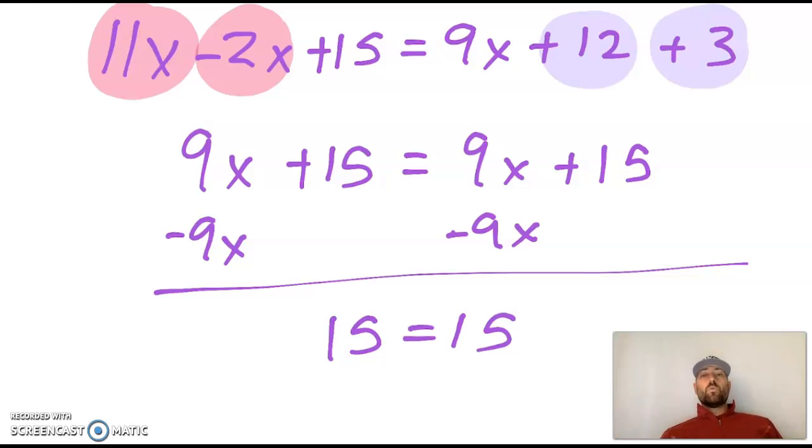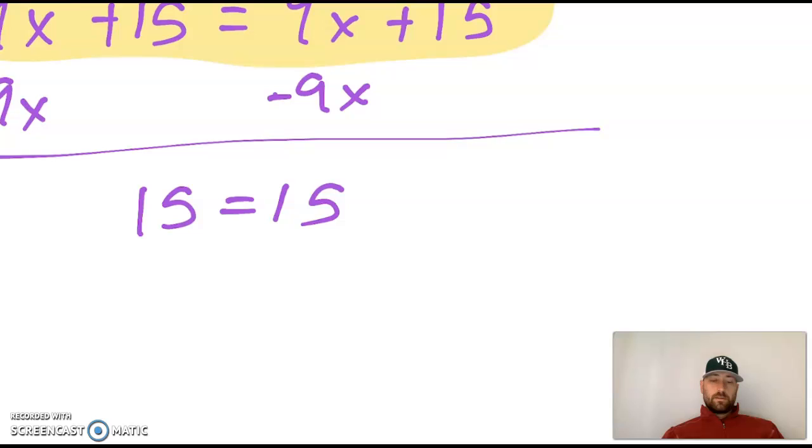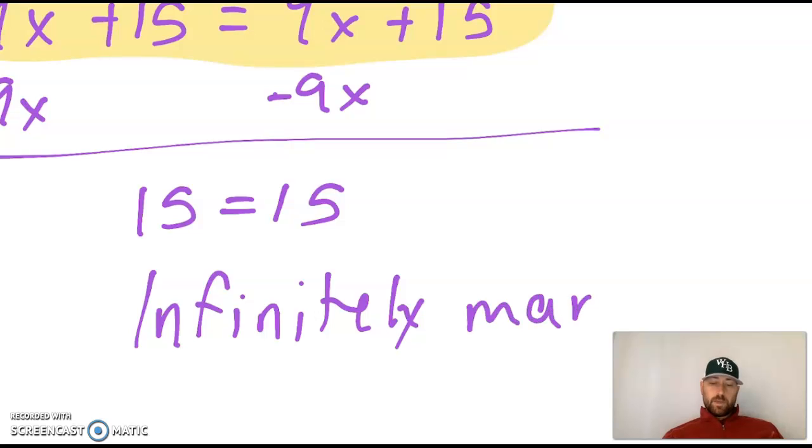And again, if I look at this top statement right there, it does not matter what number I put in there. If I multiply the number by 9 and then add 15 to it, it will be the same. So you can literally put any number in for x and you will make that a true statement. So we call that infinitely many solutions because any number you can think of would work for that question.